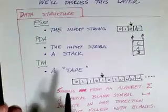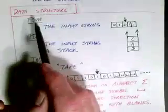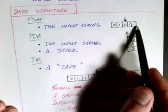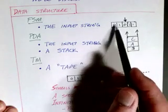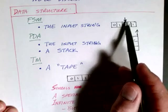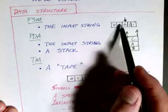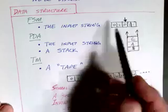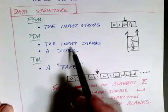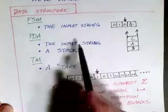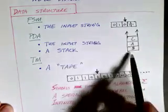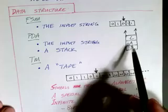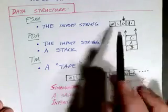Let's talk about the data structures that these machines use, starting with the finite state machine. Our only data structure was the input string — a finite length string of symbols from the input alphabet — with a current position that moves left to right and never backs up. In a pushdown automaton, we have not only the input string but also a stack, which we can push and pop. So we have a second data structure in addition to the input string.